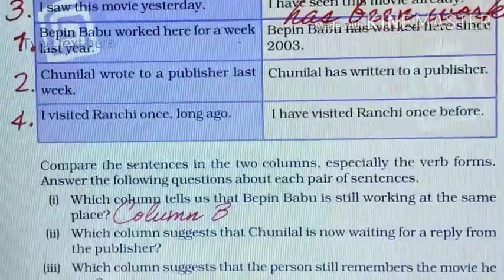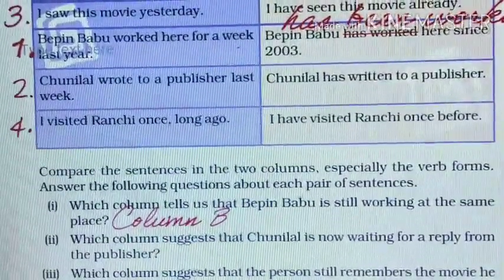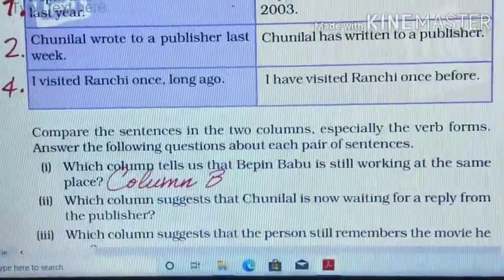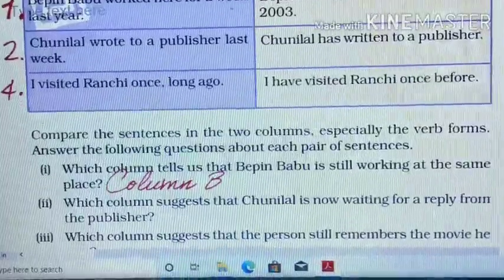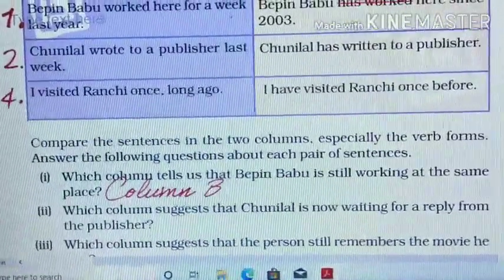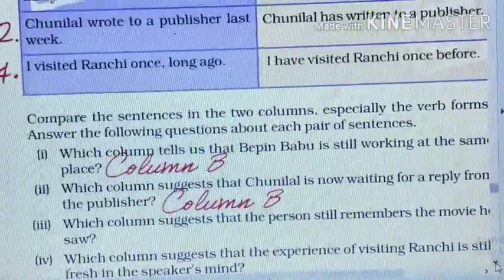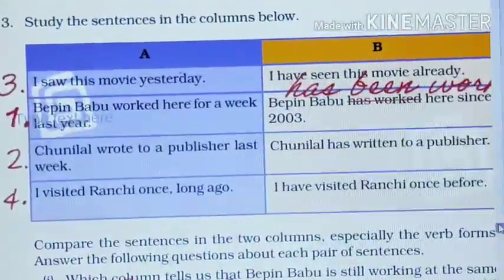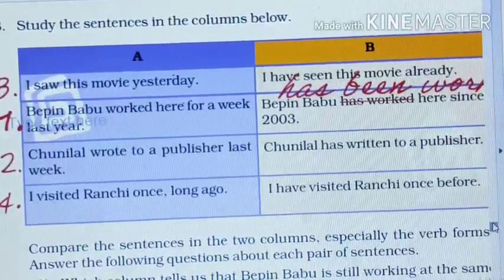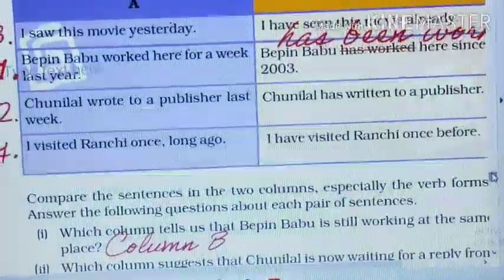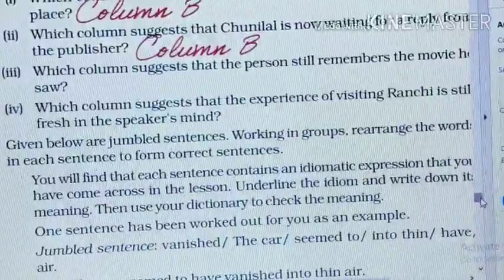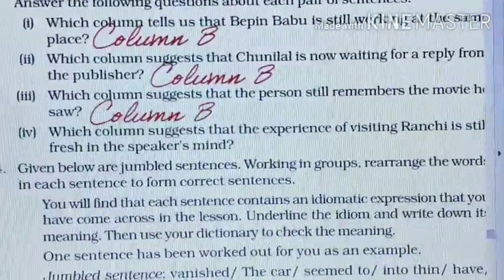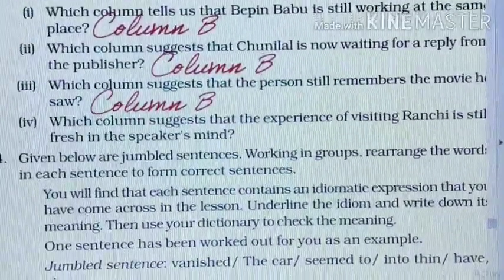Second sentence: column A — 'Chunilal wrote to a publisher last week'; column B — 'Chunilal has written to a publisher.' The question is: which column suggests that Chunilal is now waiting for a reply from the publisher? Answer: column B. Third sentence: column A — 'I saw this movie yesterday'; column B — 'I have seen this movie already.' Which column suggests that the person still remembers the movie? Answer: column B.